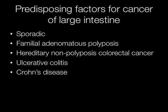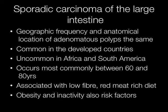Predisposing factors for cancer of the large intestine are sporadic, familial adenomatous polyposis, hereditary non-polyposis colorectal cancer syndrome, ulcerative colitis, and Crohn's disease. Sporadic carcinoma of the large intestine shares a similar geographic frequency and anatomical location as adenomatous polyps. They are common in the developed countries, but uncommon in Africa and South America. They occur most frequently between the ages of 60 and 80, associated with low fibre diet, obesity, and inactivity.